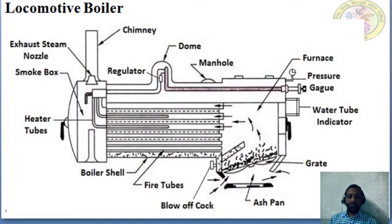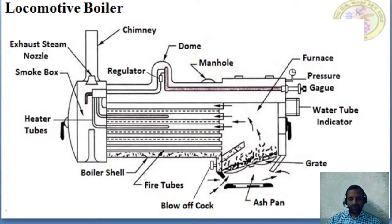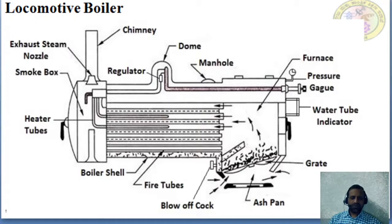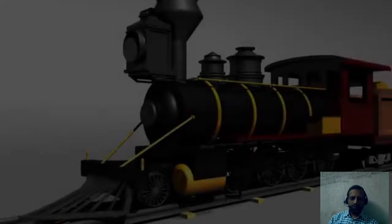Now we will see the locomotive boiler. The name itself explains it — a locomotive is a rail transport vehicle that provides motive power for a train, pulling coaches from the front. The locomotive is essentially the train engine. We will first watch a video on the locomotive boiler to see how it works.